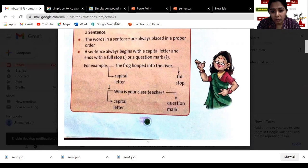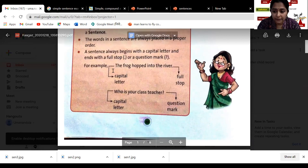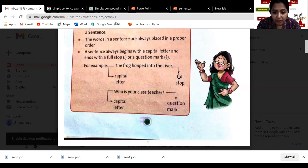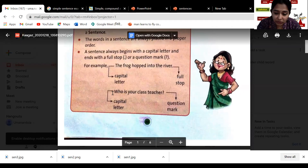So here you see the example: 'The frog hopped into the river.' The T is capital letter at the starting of the sentence, and we have a full stop. 'Who is your class teacher?' is a question where W started with capital letter and we ended the sentence with a question mark, right?